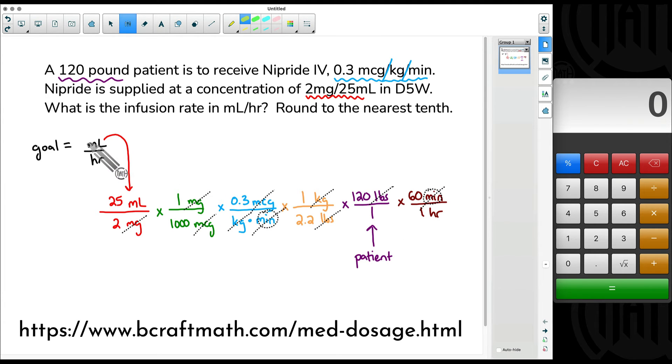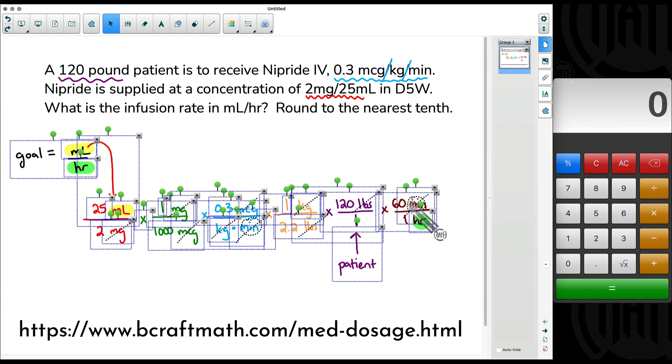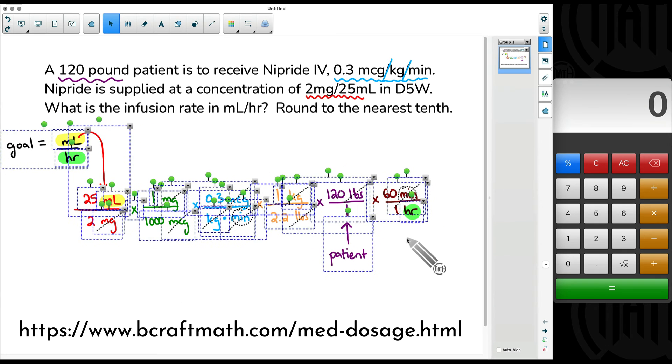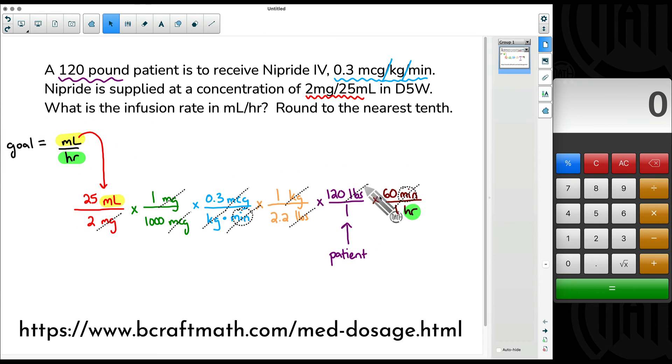And now finally, let's look at our goal again. Milliliters, that's the only word we have not crossed out at the top. And then hours, that's the only word we have not crossed out at the bottom. Finally, with all of this stuff, we have met the goal of milliliters per hour.